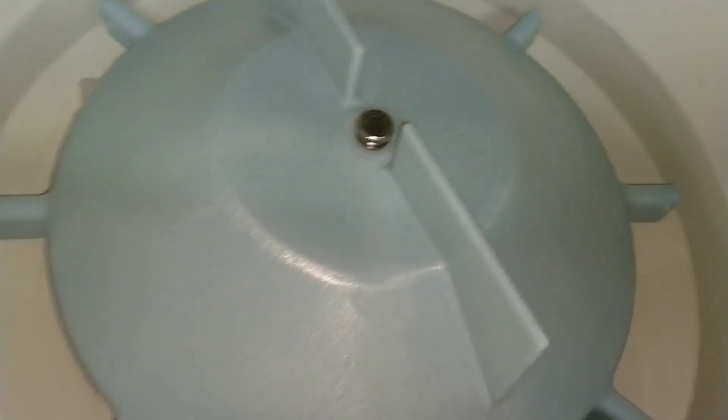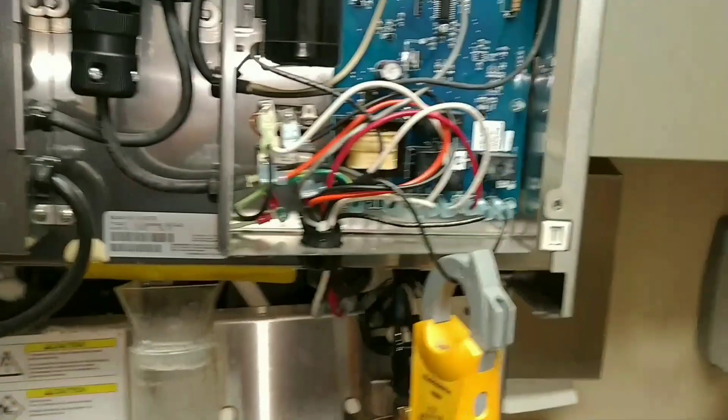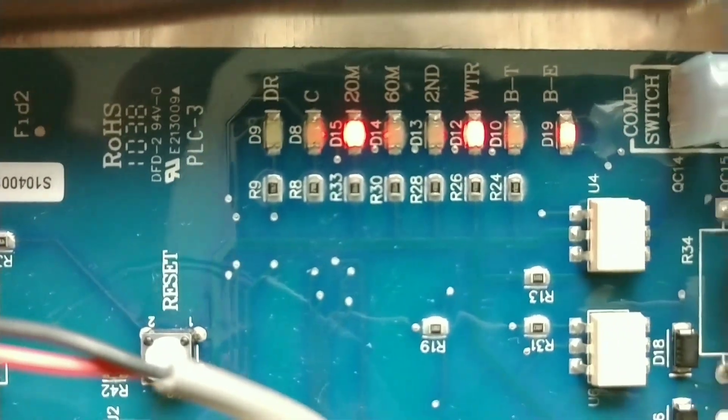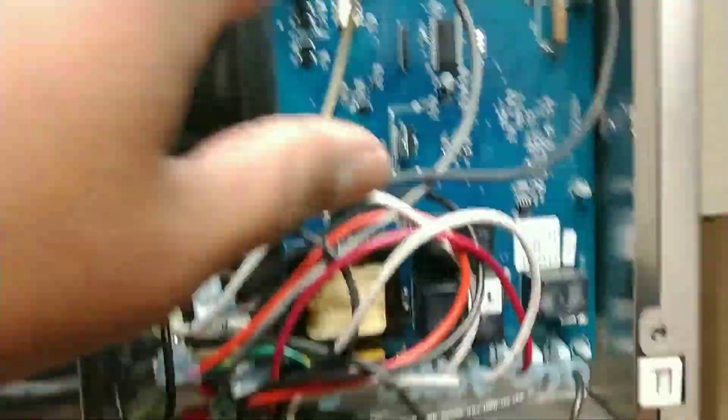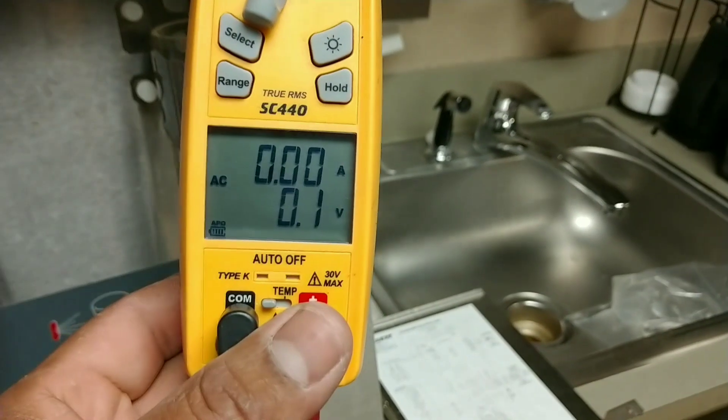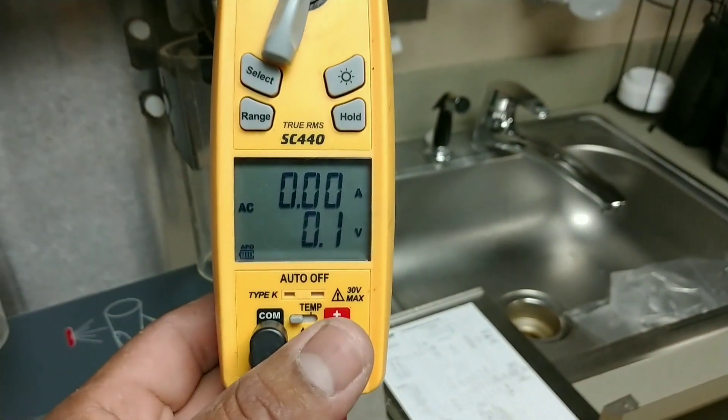Alright gents, so this machine's been running for about 10 minutes. It just started making some ice, you can see some ice right there. Just started making ice and it went off on our 20m light, which is an over torque. Let's see if we can see how high it's going. Just hit the reset button.